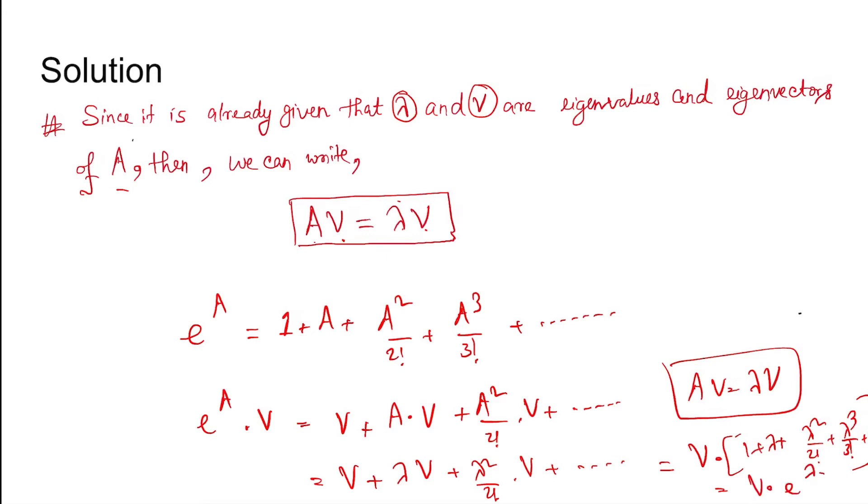Because this is the series expansion of E to the power lambda. So we get E to the power A into V equals V into E to the power lambda. So we can tell that for E to the power A, the eigenvalue is E to the power lambda and the eigenvector is V.